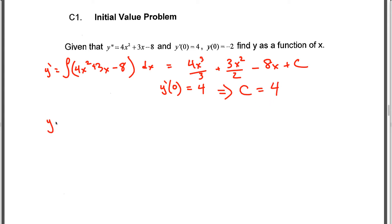So to find the function now, we integrate the first derivative, and that means we're going to integrate 4x³/3 + 3x²/2 - 8x + 4 with respect to x. And if we integrate that, we're going to end up with 4x⁴ over 4 times 3, plus 3x³ over 2 times 3, because the 2 is already there, minus 8x²/2 plus 4x plus C.